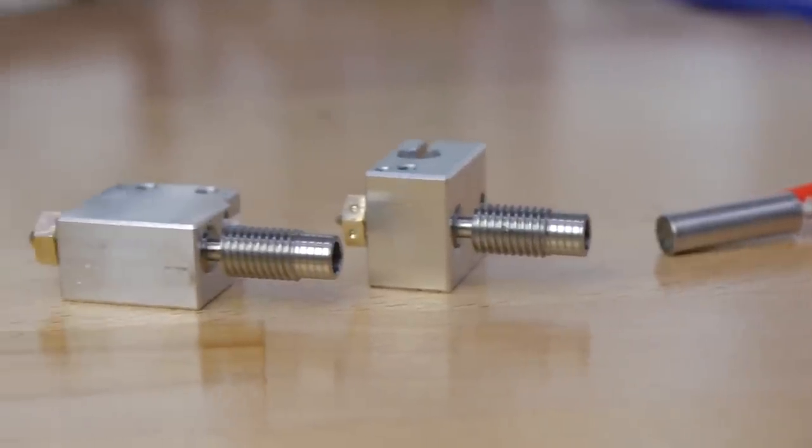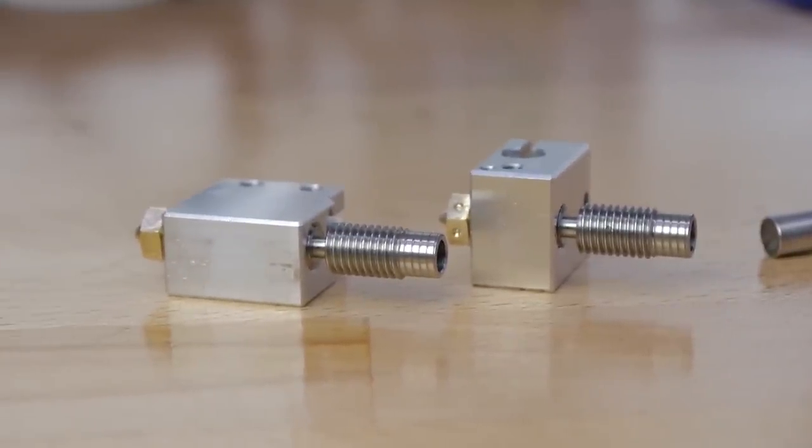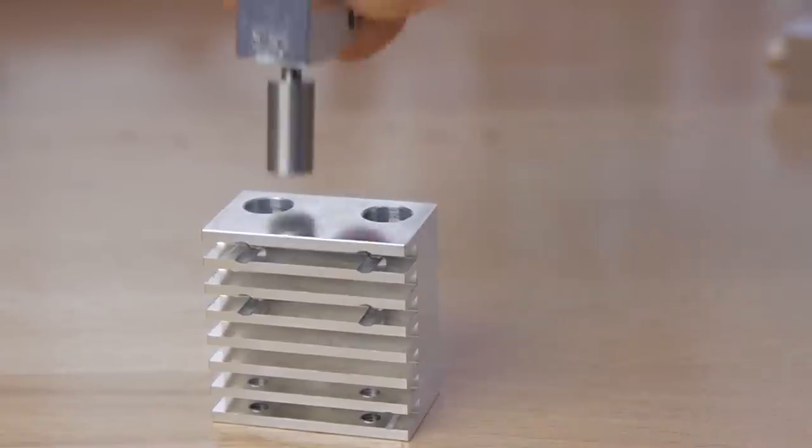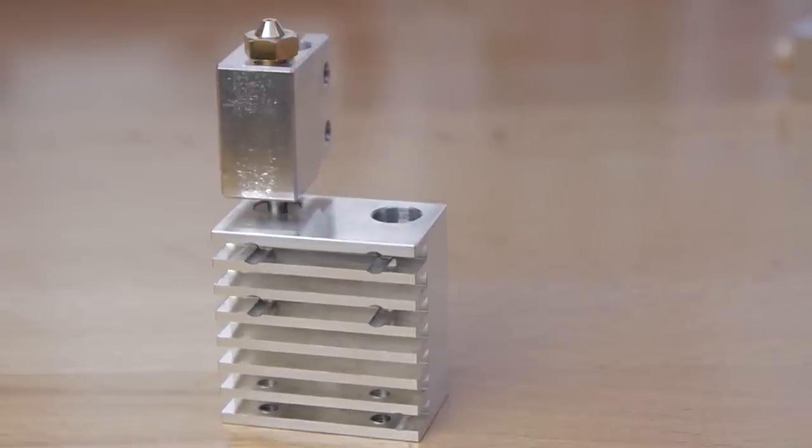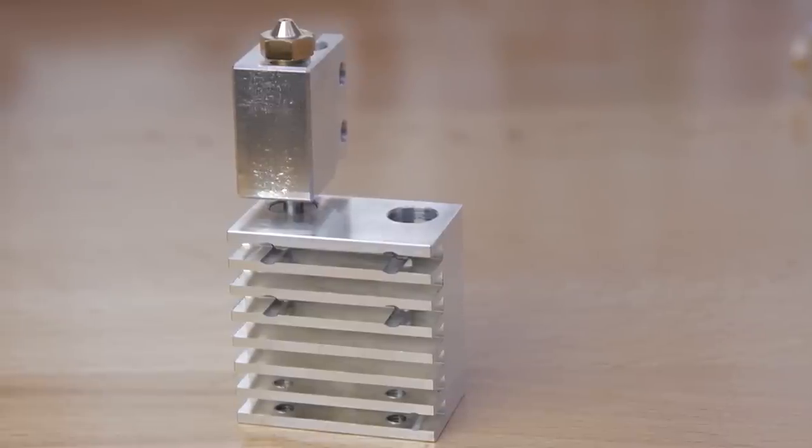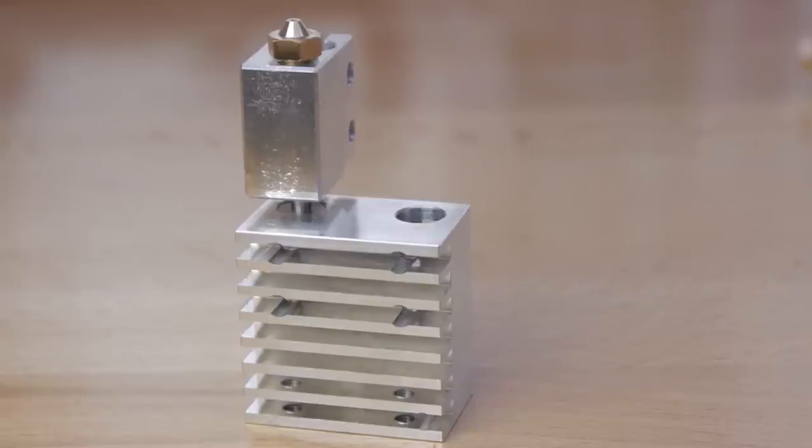So you can either use the V6 heatbreak as intended, or the V5 heatbreak and heatsink, or even the Kraken-style heatbreaks that fit, obviously, a quad-hotend Kraken, but can also be used in the Chimera and Cyclops heatsink. You could essentially make a double-volcano Cyclops V6 thing, or even use it as a quad-volcano Kraken monster.